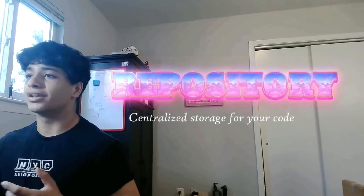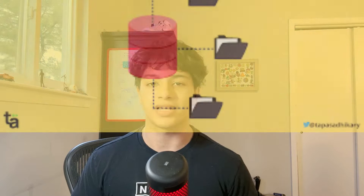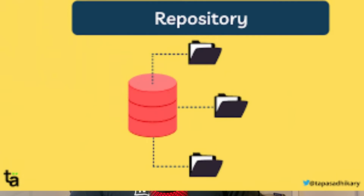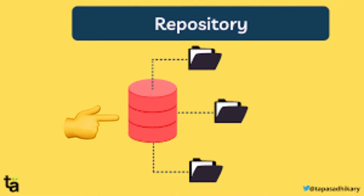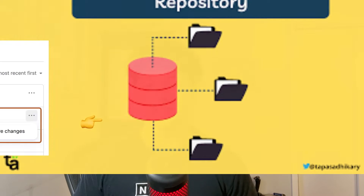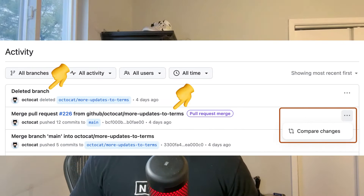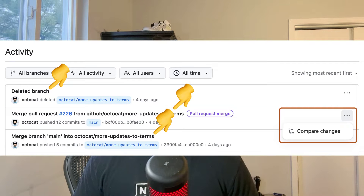Git uses repositories — and if you're a real G, you call them repos — to organize your project. Each repo has branches and commits. Repos are essentially the main working directories for your projects, and Git tracks any changes you make to files within these directories.